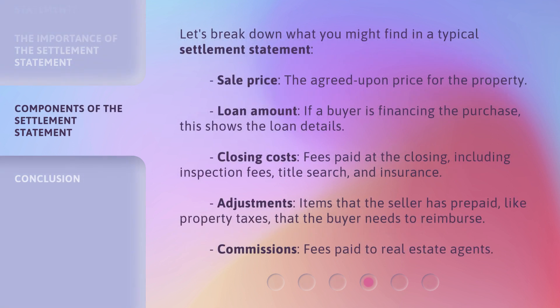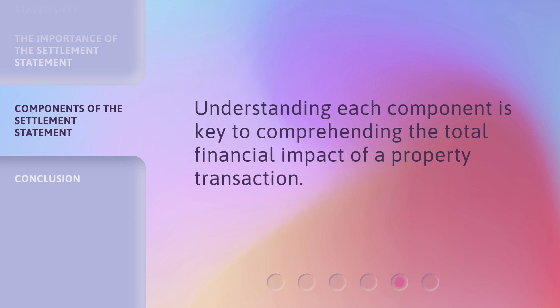Let's break down what you might find in a typical settlement statement. Sale price: the agreed upon price for the property. Loan amount: if a buyer is financing the purchase, this shows the loan details. Closing costs: fees paid at the closing, including inspection fees, title search, and insurance. Adjustments: items that the seller has prepaid, like property taxes, that the buyer needs to reimburse. Commissions: fees paid to real estate agents. Understanding each component is key to comprehending the total financial impact of a property transaction.